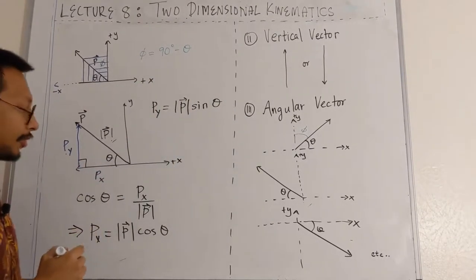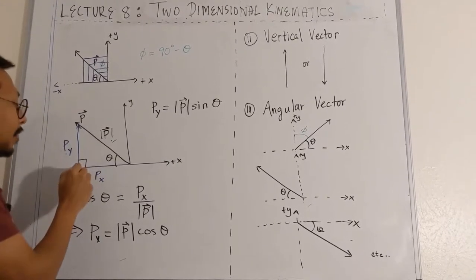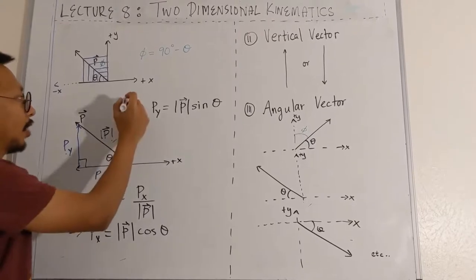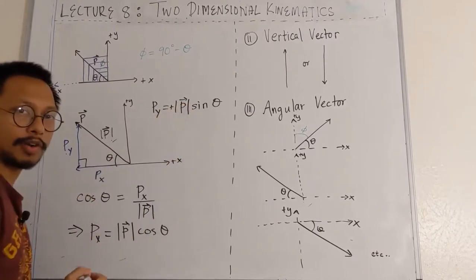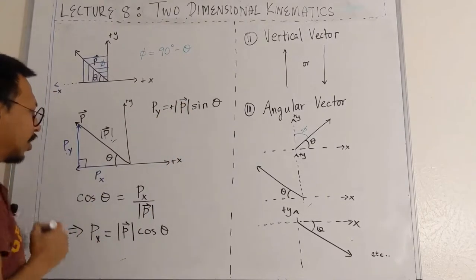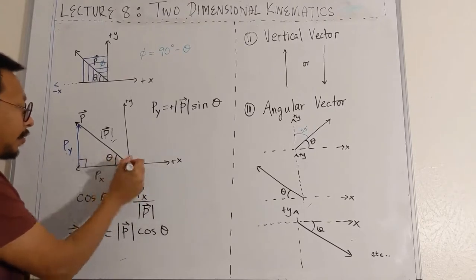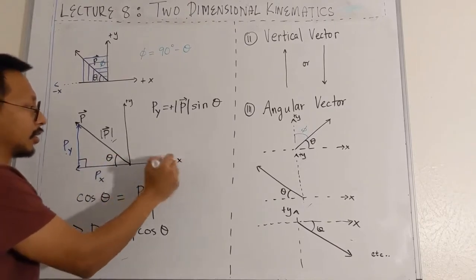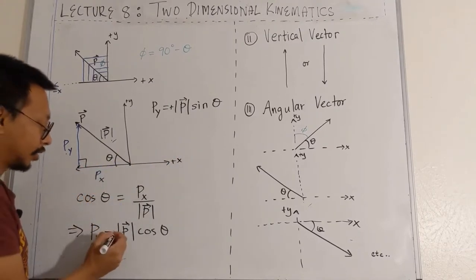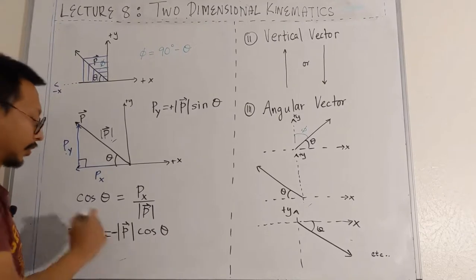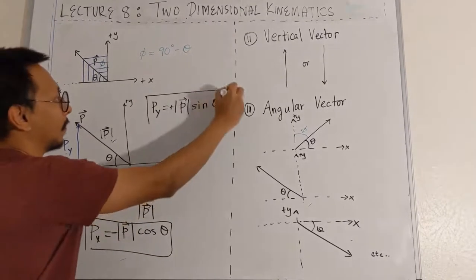Now let's look at the directions of px and py. py is going straight upward, and since upward is positive y, the y-component has a positive direction. The x-component goes straight leftward from this point, and since positive x is rightward, px is in the negative direction. So those are the components of the vector.